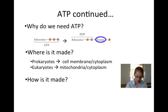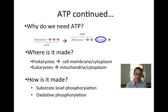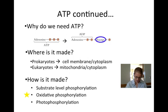ATP can be produced by three different means. It is produced by substrate level phosphorylation in the Krebs cycle when a phosphate is transferred from a substrate to ADP. It is produced by oxidative phosphorylation in the electron transport chain when ATP is generated by the passing of electrons from one electron carrier to the next until they are finally accepted by oxygen. And it is produced by photophosphorylation during photosynthesis. Oxidative phosphorylation is the most efficient means of generating ATP.